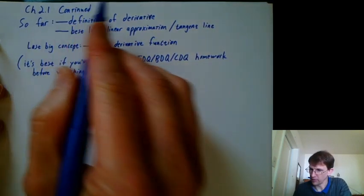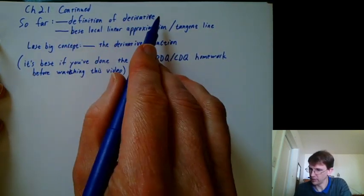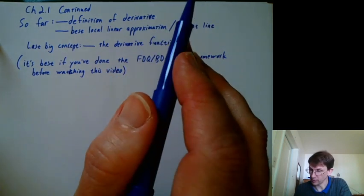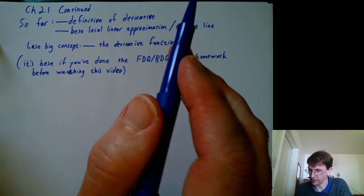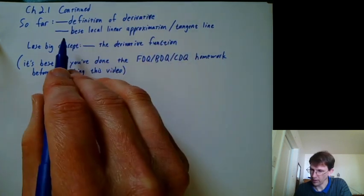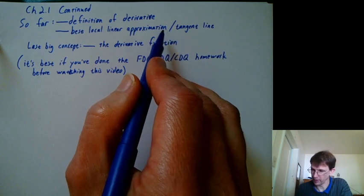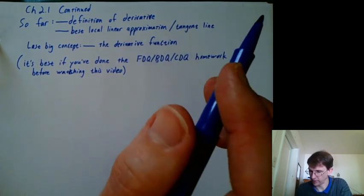All right, so we're continuing chapter 2.1. So far we've had the definition of a derivative as the limit of a difference quotient as delta x or h gets smaller and smaller towards zero. We've talked about the best local linear approximation function, capital L of x, also called the tangent line.